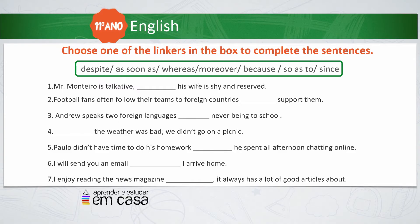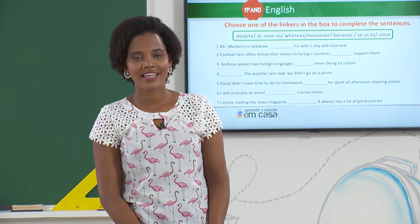The sentences are: number one — Mr. Monteiro is talkative. His wife is shy and reserved. Number two — football fans often follow their teams to foreign countries to support them. Number three — Andrew speaks two foreign languages, never been to school. Number four — the weather was bad, we didn't go on a picnic. Number five — Paulo didn't have time to do his homework. He spent all afternoon chatting online. Number six — I will send you an email. I arrive home. Number seven — I enjoy reading the news magazine. It always has a lot of good articles. Take some time to do it. Use your dictionary if you think it's necessary.